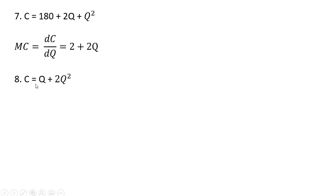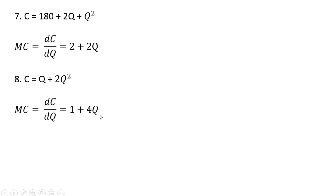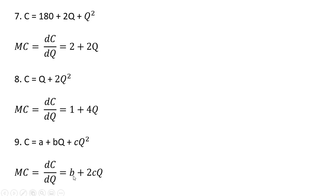Example 8. Cost equals q plus 2q squared. The derivative of q is just 1 — the coefficient out in front of it, which is just 1 in this case. And then for 2q squared, bring down the 2 in front, so 2 times 2 is 4. Subtract 1 from the exponent, and you're left with 4q. So in general, if you have a cost equation that looks like this, marginal cost will be given by b plus 2 times cq.